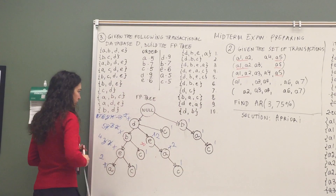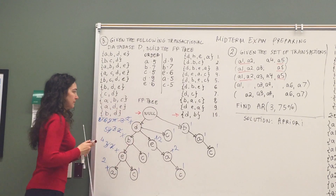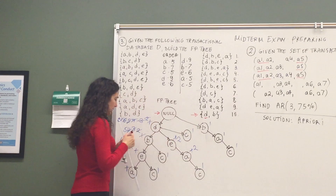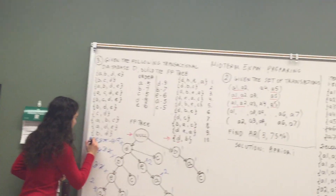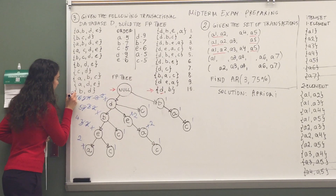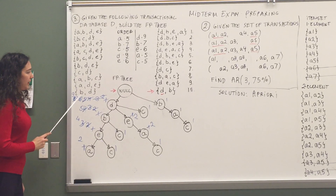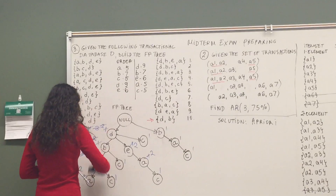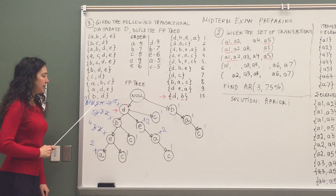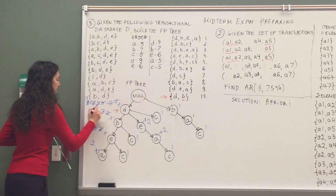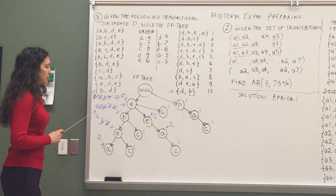And the last transaction: first item is D — our favorite item. We do have D, and the count becomes 9. Next item is B — we do have a child named B, so we increment the count. This is the final tree — this is the FP tree.